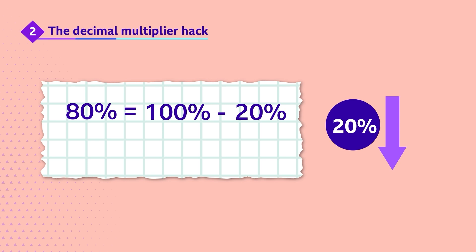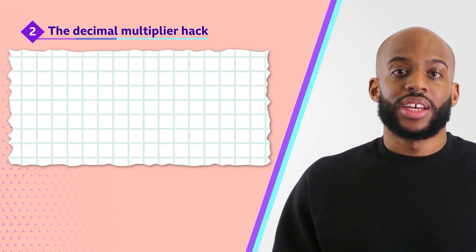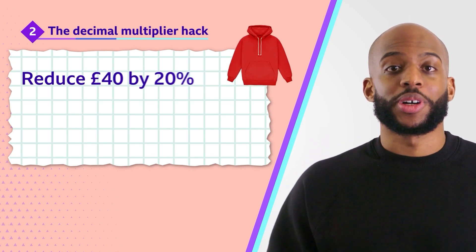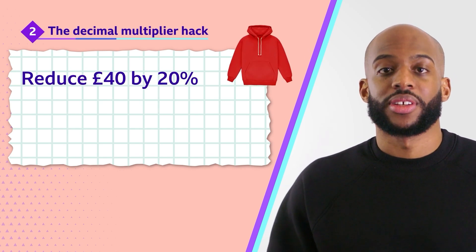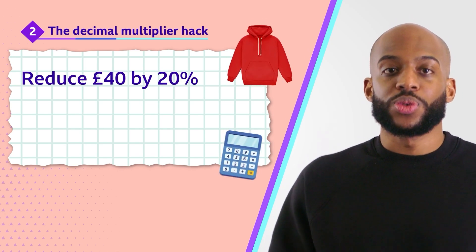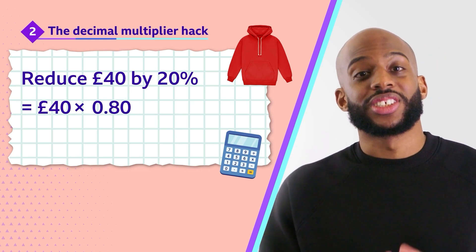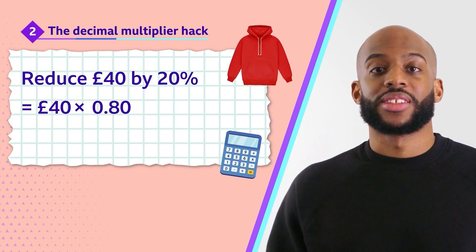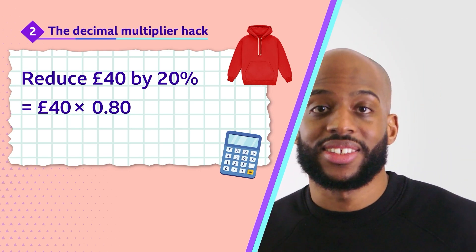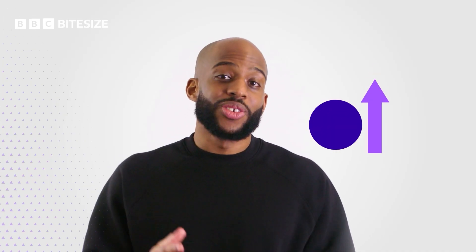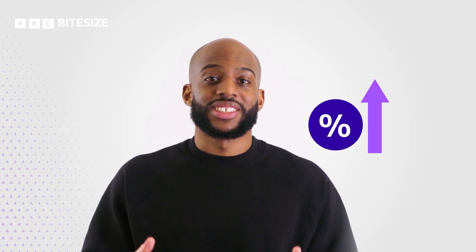80% as a decimal is 80 divided by 100, which equals 0.8. Let's say that £40 top you've got your eye on is reduced by 20%. You have to multiply 40 by 80% as a decimal, which is 0.8. 40 times 0.8 equals £32.